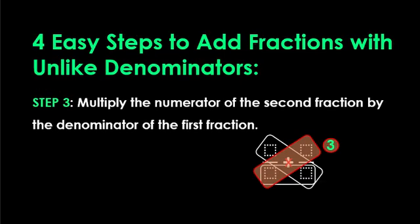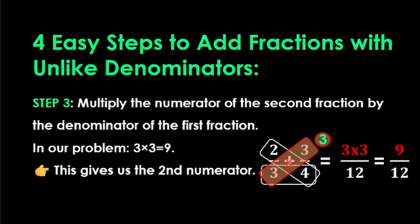Step 3, multiply the numerator of the second fraction by the denominator of the first fraction. In our problem, 3 times 3 equals 9. This gives us the second numerator.